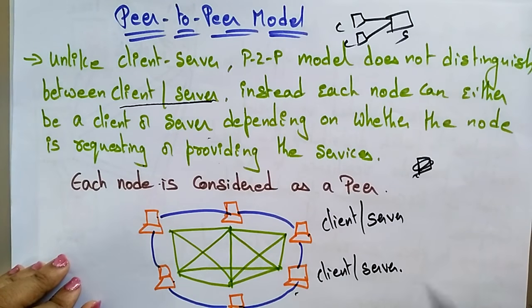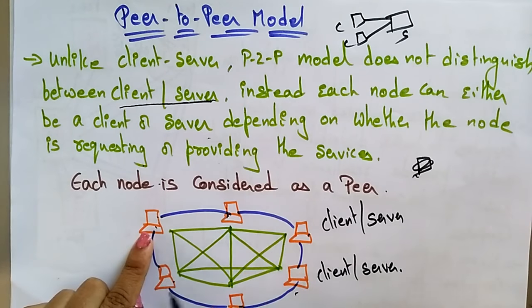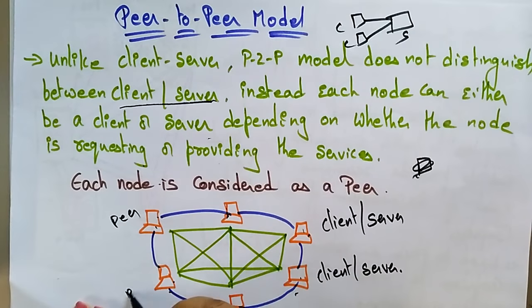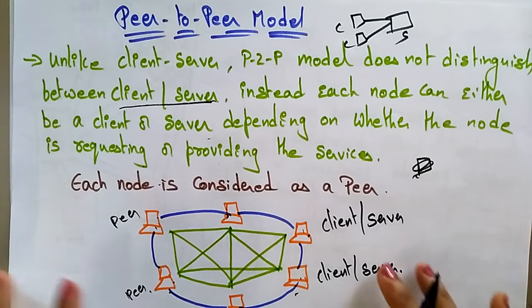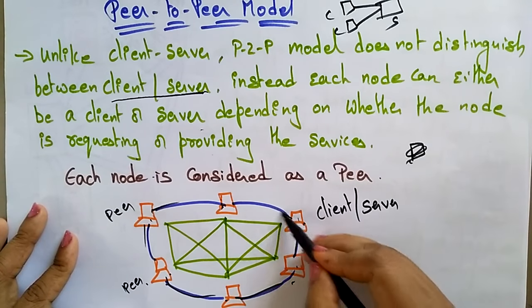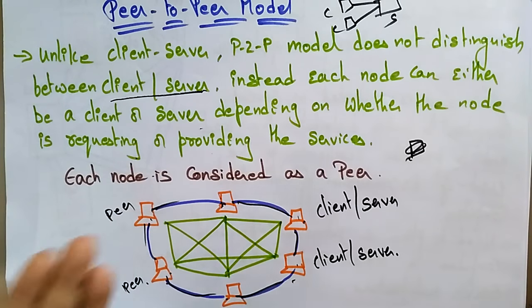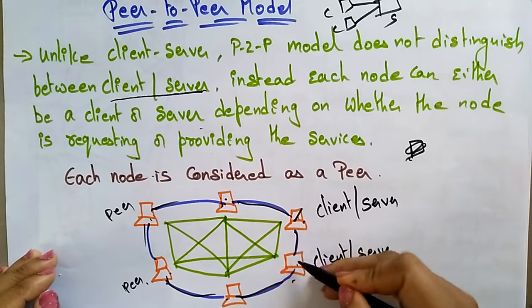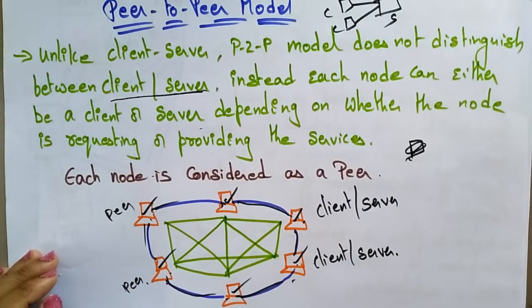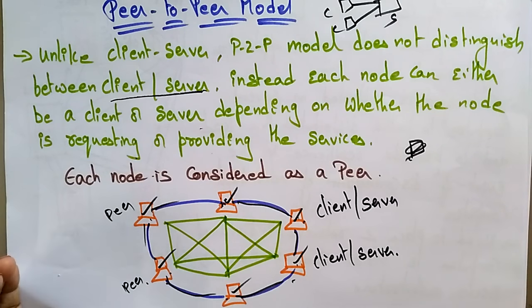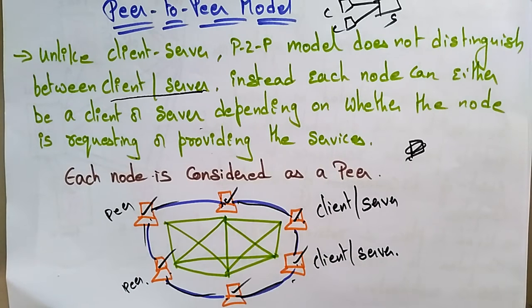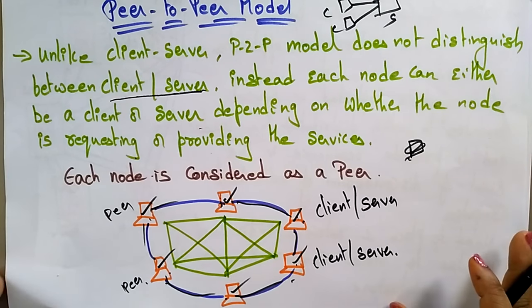Each system is acting as a client as well as a server — that is the peer-to-peer model. Each node, which we call a peer, is connected to the network. These systems communicate based on the requirement. If a node is requesting, it acts as a client; if it is responding, it acts as a server.